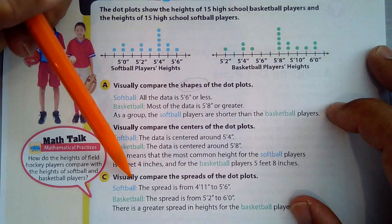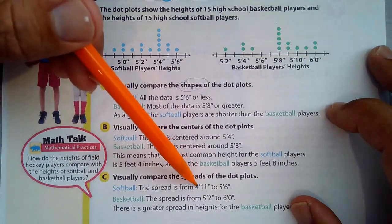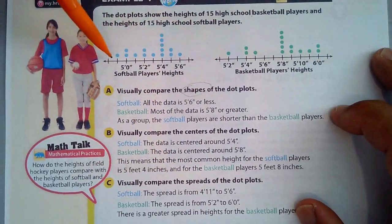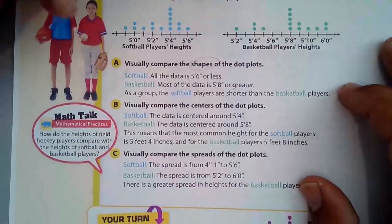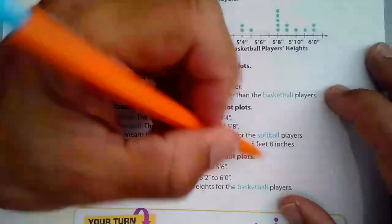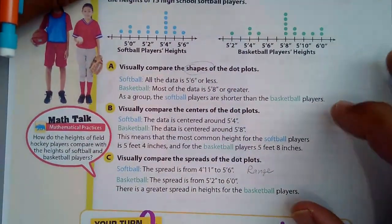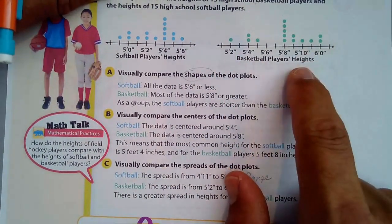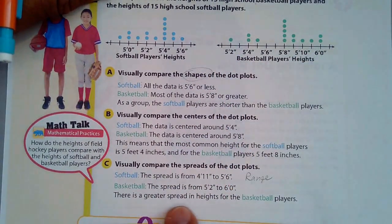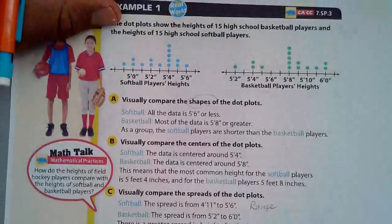Let's talk about the spreads. The softball spread is from 4'11 to 5'6. That's the range right there is the spread. And I guess maybe I would write range. And 5'2 to 6', 5'2 to 6' for the basketball players. There's a greater spread in the heights of the basketball players.